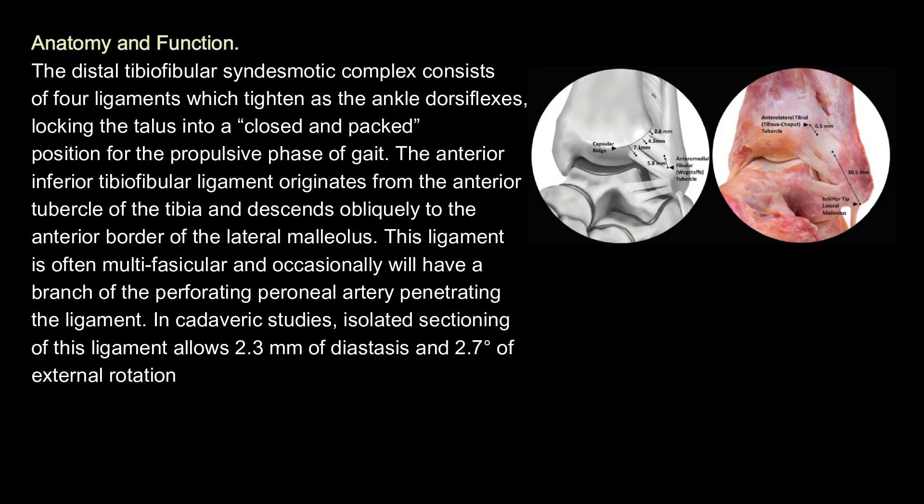Anatomy and function: The distal tibiofibular syndesmotic complex consists of four ligaments which tighten as the ankle dorsiflexes, locking the talus into a closed and packed position for the propulsive phase of gait. The anterior inferior tibiofibular ligament originates from the anterior tubercle of the tibia and descends obliquely to the anterior border of the lateral malleolus. This ligament is often multifascicular and occasionally will have a branch of the perforating peroneal artery penetrating the ligament. In cadaveric studies, isolated sectioning of this ligament allows 2.3 millimeters of diastasis and 2.7 degrees of external rotation.